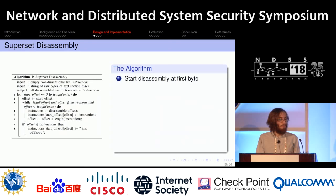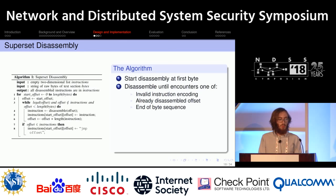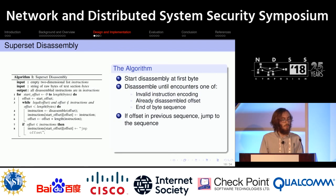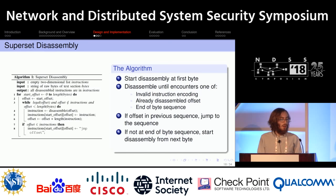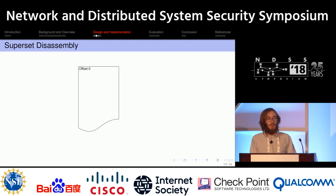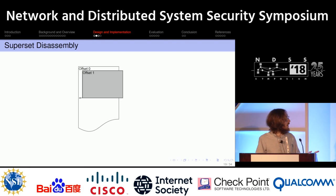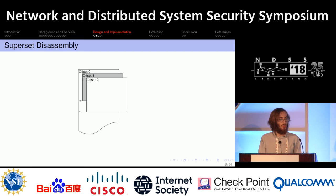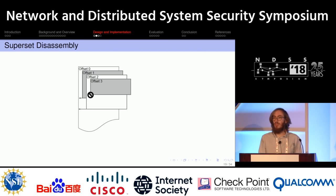The superset disassembly is important for obtaining the full superset of code. It's fairly straightforward: start disassembling at the first byte and disassemble until one of three conditions is true — an invalid instruction encoding is encountered, a previously disassembled offset is encountered, or the end of the text section is reached. If the offset was found in a previous sequence, insert a jump to that previous sequence; otherwise continue to the next byte. For example, starting at offset zero you disassemble until an invalid instruction or end; then offset one may encounter an already-disassembled offset and insert a jump; offset three encounters an invalid instruction and stops.